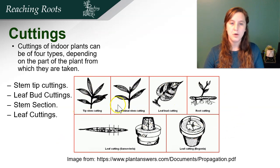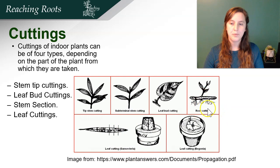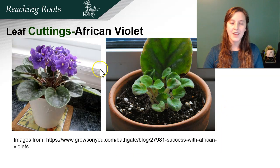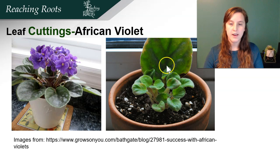There are lots of different types of cuttings. Cuttings of indoor plants can be of four types depending on the part of plant from which they're taken: tip stem cutting, subterminal stem cutting, leaf bud cutting, or a leaf cutting. You can also have a root cutting, though only specific types of plants will generate stems from roots. A plant great for getting started with leaf cuttings is the African violet — they root very easily with or without a rooting hormone. You take a leaf, put it in the growing medium, and you'll have a whole new plant, because of the totipotency of plants.